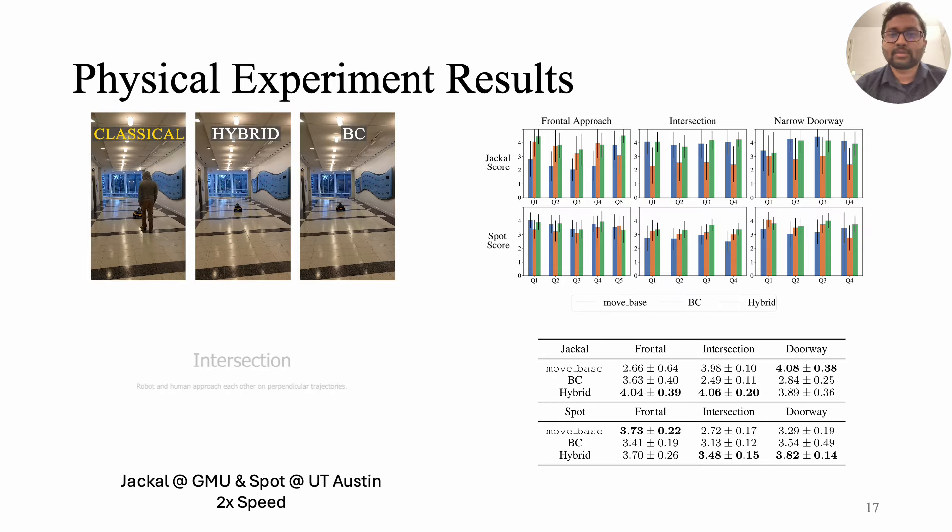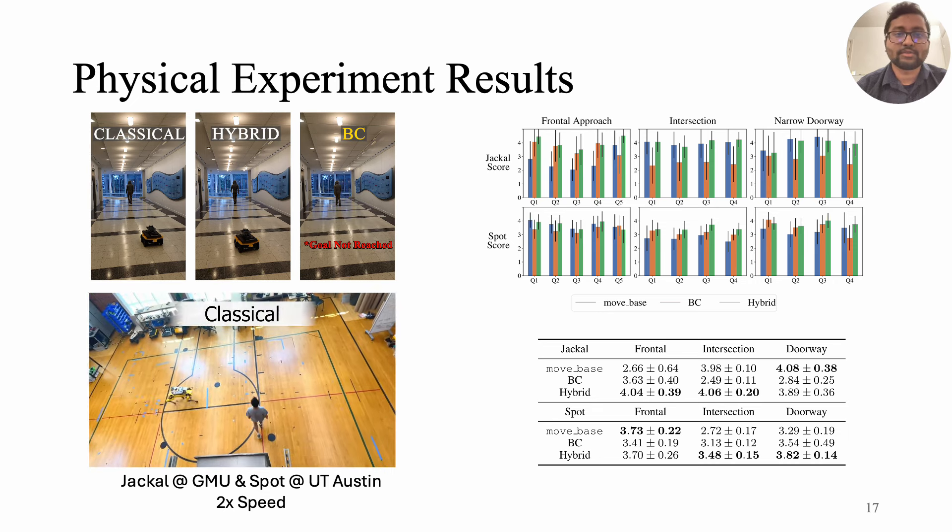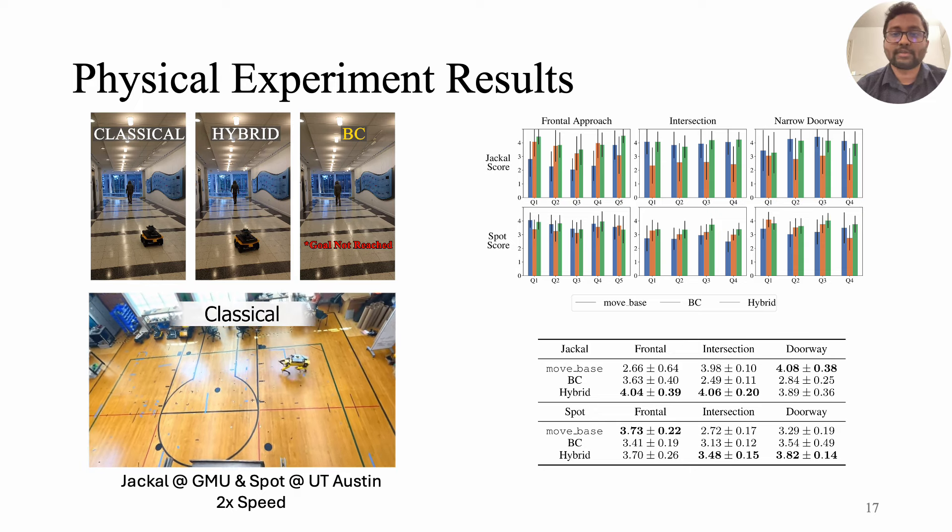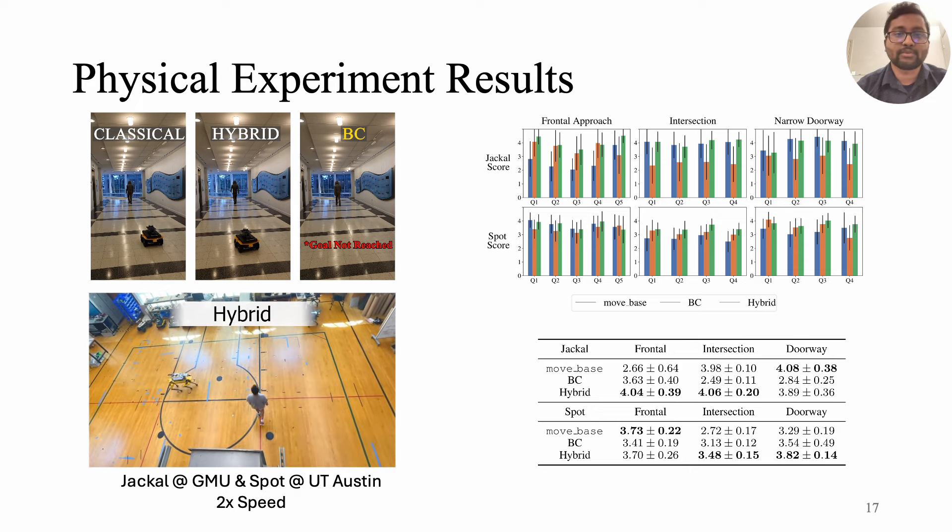We implement the hybrid approach on two robots using different classical planners across two campuses, Jekyll at JMU and Spot at UT Austin. We conducted a human study using a developed questionnaire to assess the social compliance of robots in three scenarios: frontal approaches, intersections, and narrow doorways.